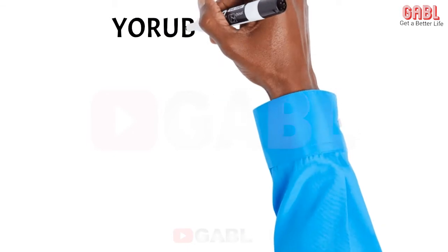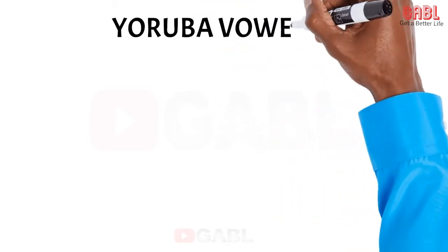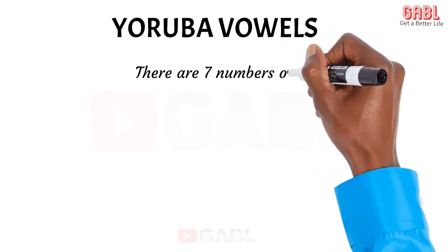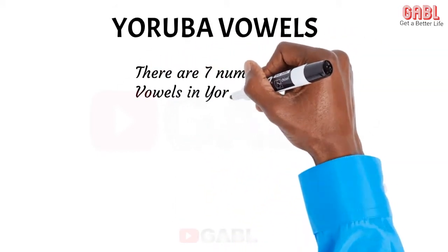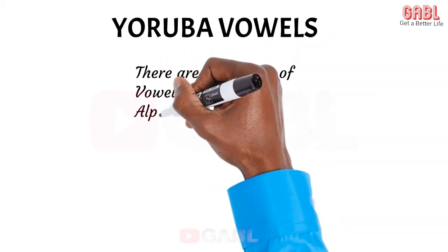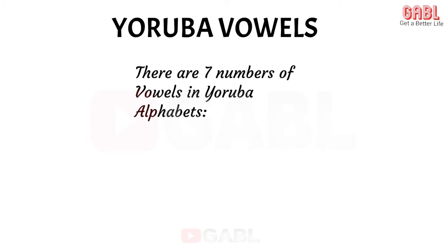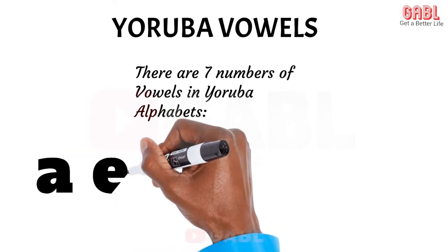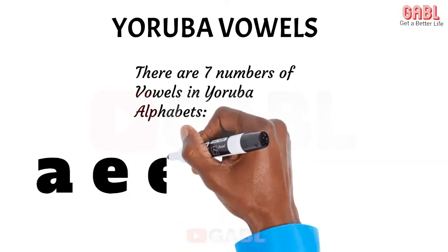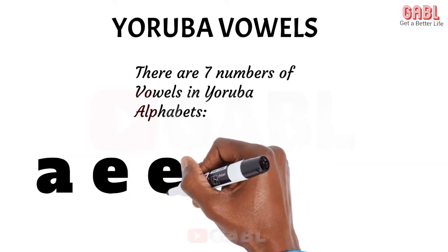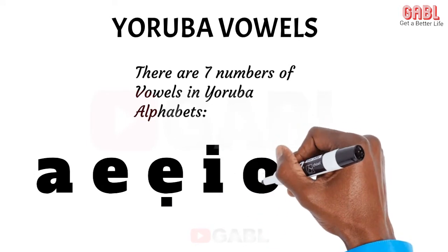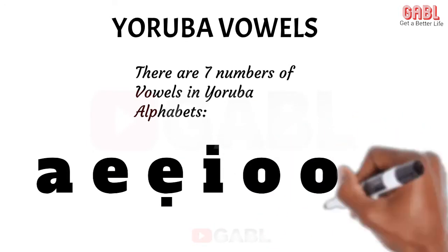Now the vowels. There are seven vowels in the Yoruba alphabet. We have A, E, Ẹ, I, O, Ọ, U.